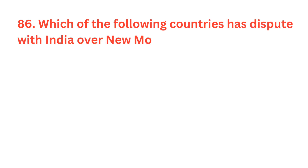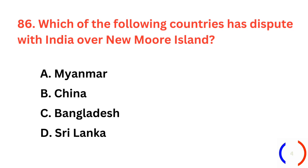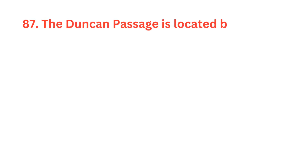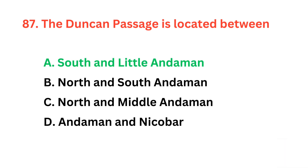Which of the following countries has a dispute with India over New Moore Island? The correct answer is option C, Bangladesh. The Duncan Passage is located between? The correct answer is option A, South Andaman and Little Andaman.